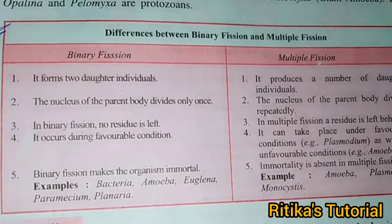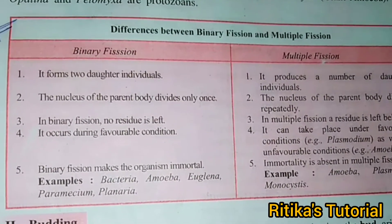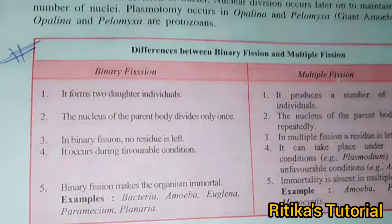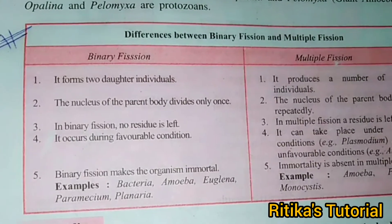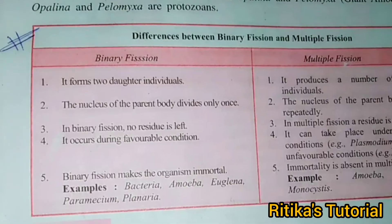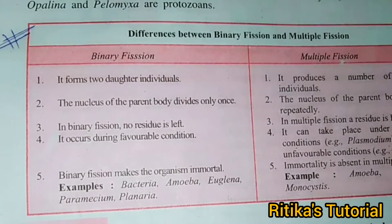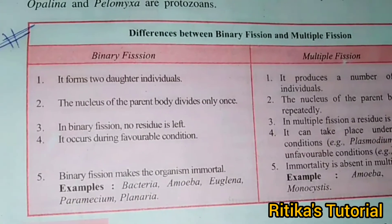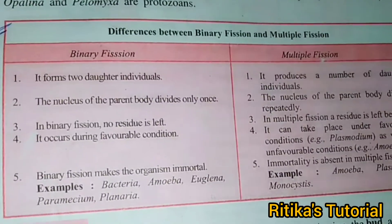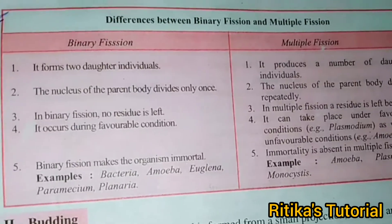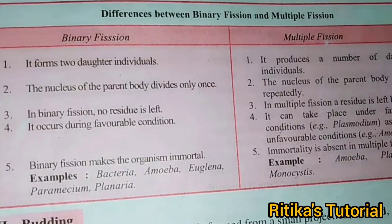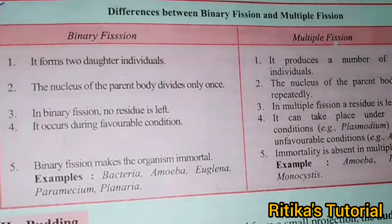Fifth point: binary fission makes the organism immortal — immortal means endless, which will never be left. Examples include bacteria, Amoeba, Euglena, Paramecium, and Planaria — these all come under binary fission. Whereas in multiple fission, immortality is absent, so mortal chances are present. Examples include Plasmodium.